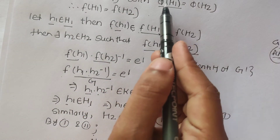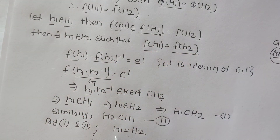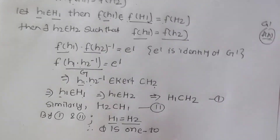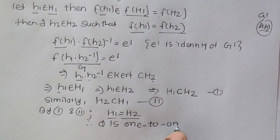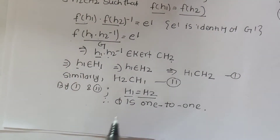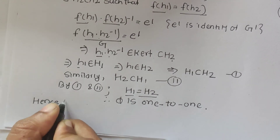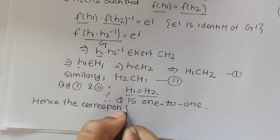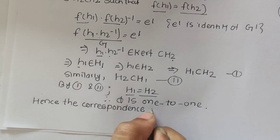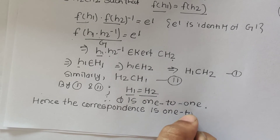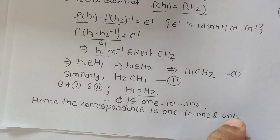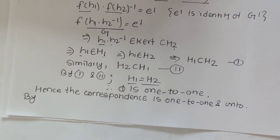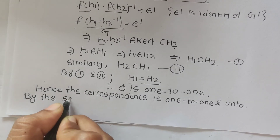Therefore φ(H1) = φ(H2) implies H1 = H2, so we can say that φ is 1-to-1. Hence the correspondence is 1-to-1 and onto. Using subgroup conditions we can verify this property.